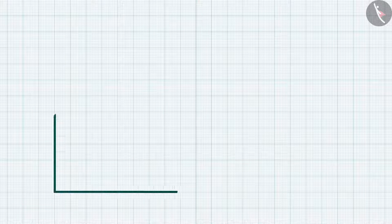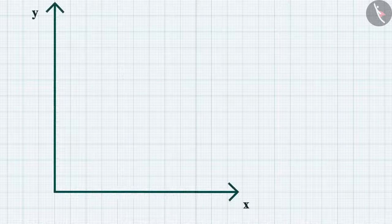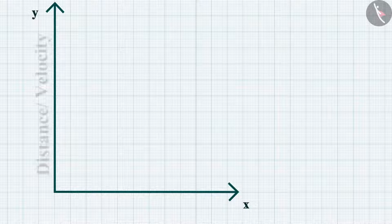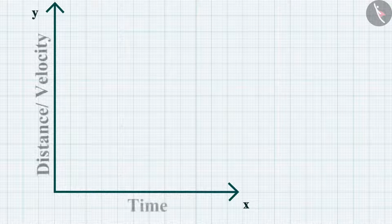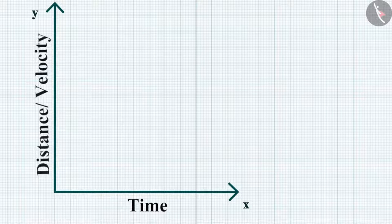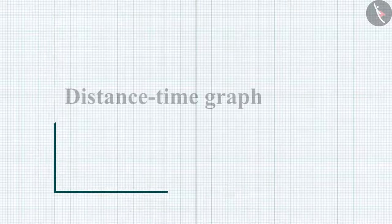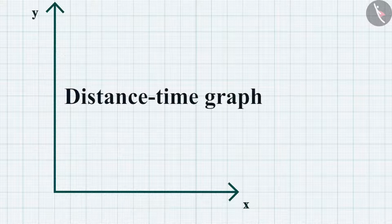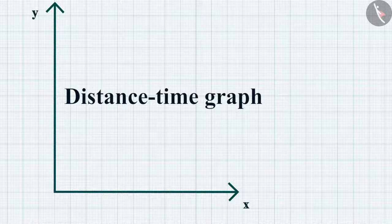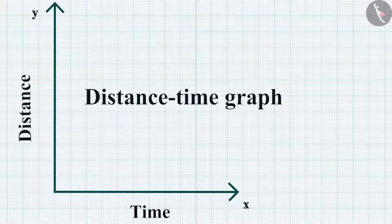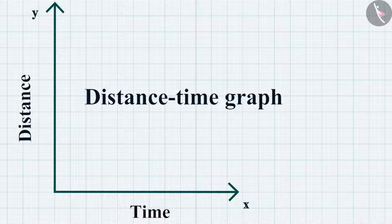In a line graph, we can represent one physical quantity, like distance or velocity, with another quantity such as time. Let's first discuss the distance-time graph. In this graph, let us take time along the x-axis and distance along the y-axis.